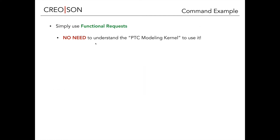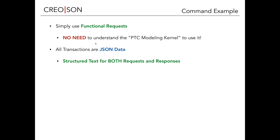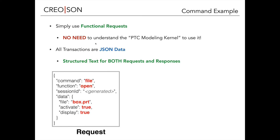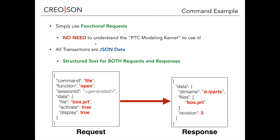To give you an example of how this works: we focused primarily on simple functional requests, meaning you do not need to understand the PTC modeling kernel to really use it. All of the transactions are JSON data — structured text for both requests and responses. In this example, to open a file, you'll see a command called 'file' and a function called 'open'. The data sent is the name of the file you want to open, whether to activate it, and whether to display it. When that runs, it returns a response saying it opened the file. If you put a wildcard in, it'll open multiple matches, showing you the directory and, for a single file, the revision that was opened.